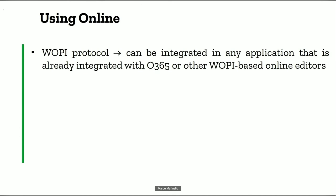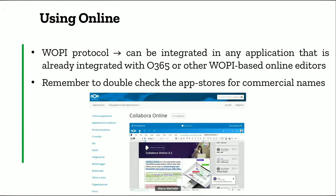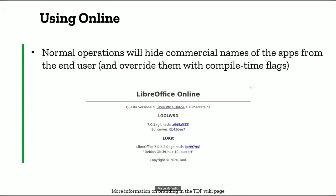As mentioned before, Online uses the WOPI protocol and can be integrated in any application that is already integrated with Office 365 or other WOPI-based online editors. Remember to double-check the app stores for commercial names — you will find apps to integrate LibreOffice Online into another software released under a commercial name, for example 'Collabora Online.' This also applies to Moodle: the Moodle plugin is also named 'Collabora Online.' You shouldn't be afraid of that, since normal operation will hide the commercial name from the end user and override them with compile-time flags. Under the help menu 'Info,' you will find the string you specified at build time.